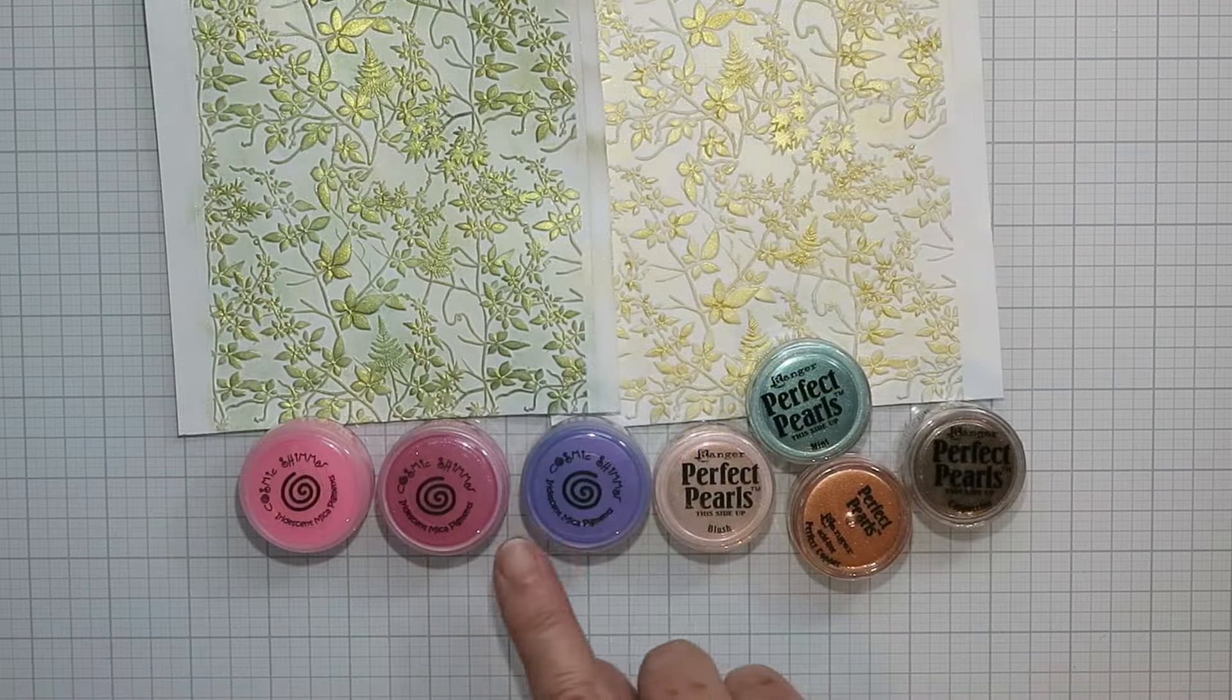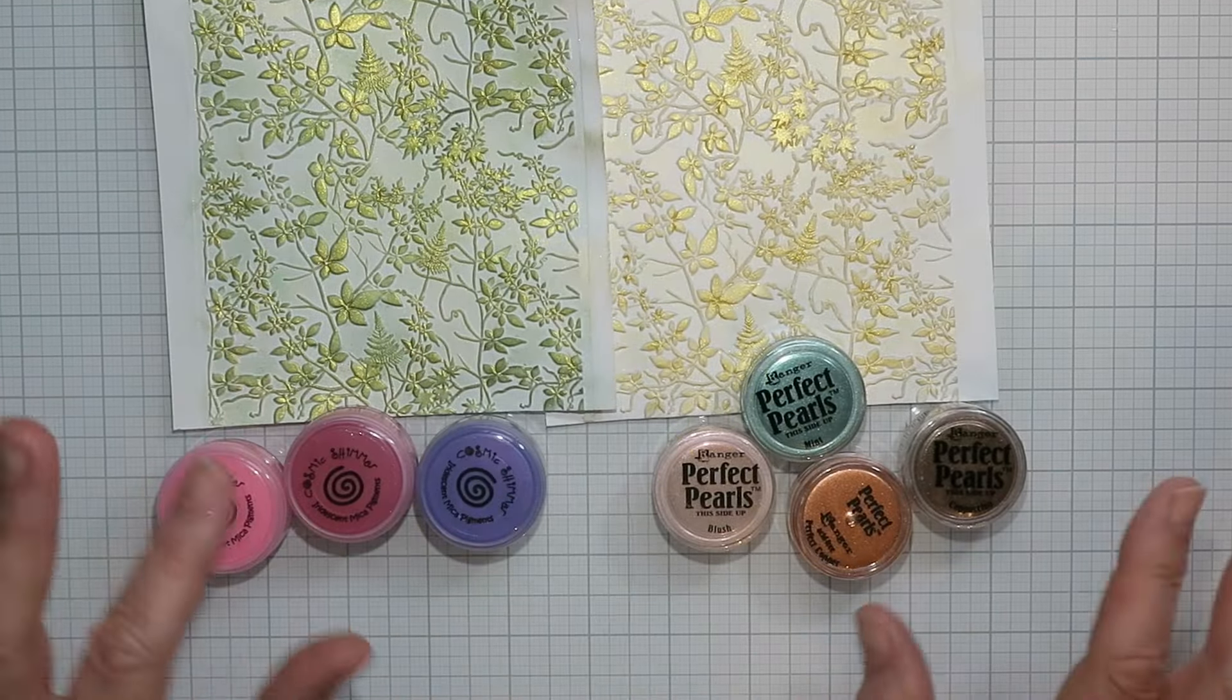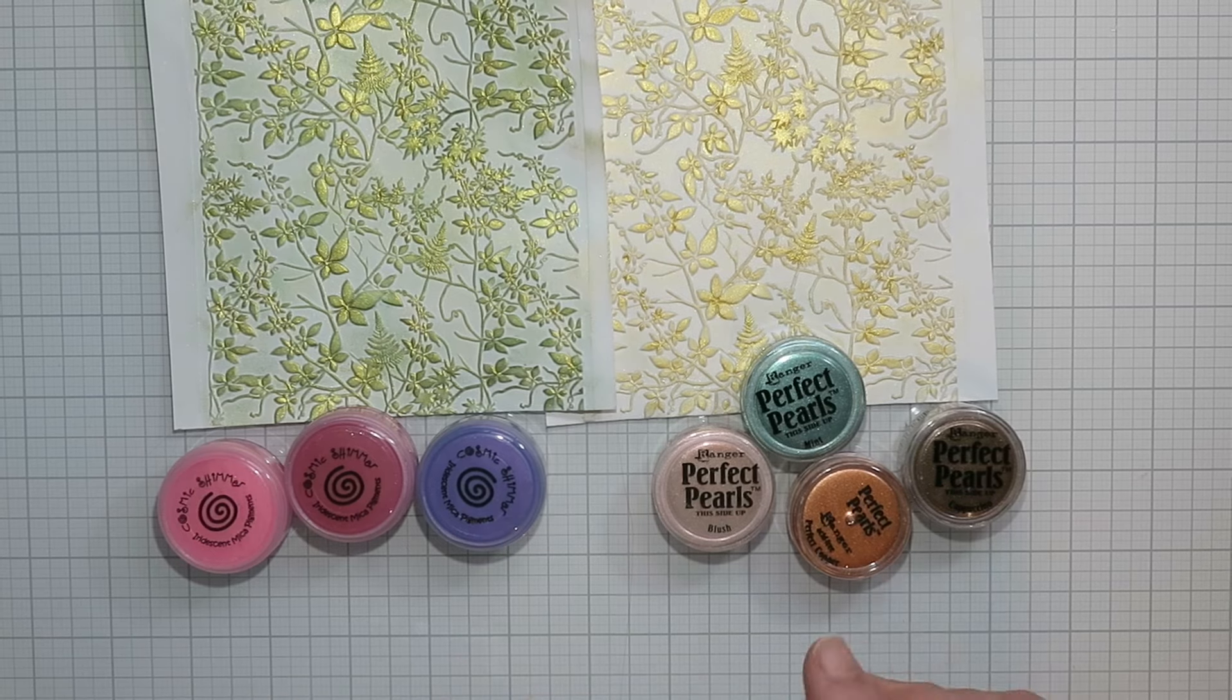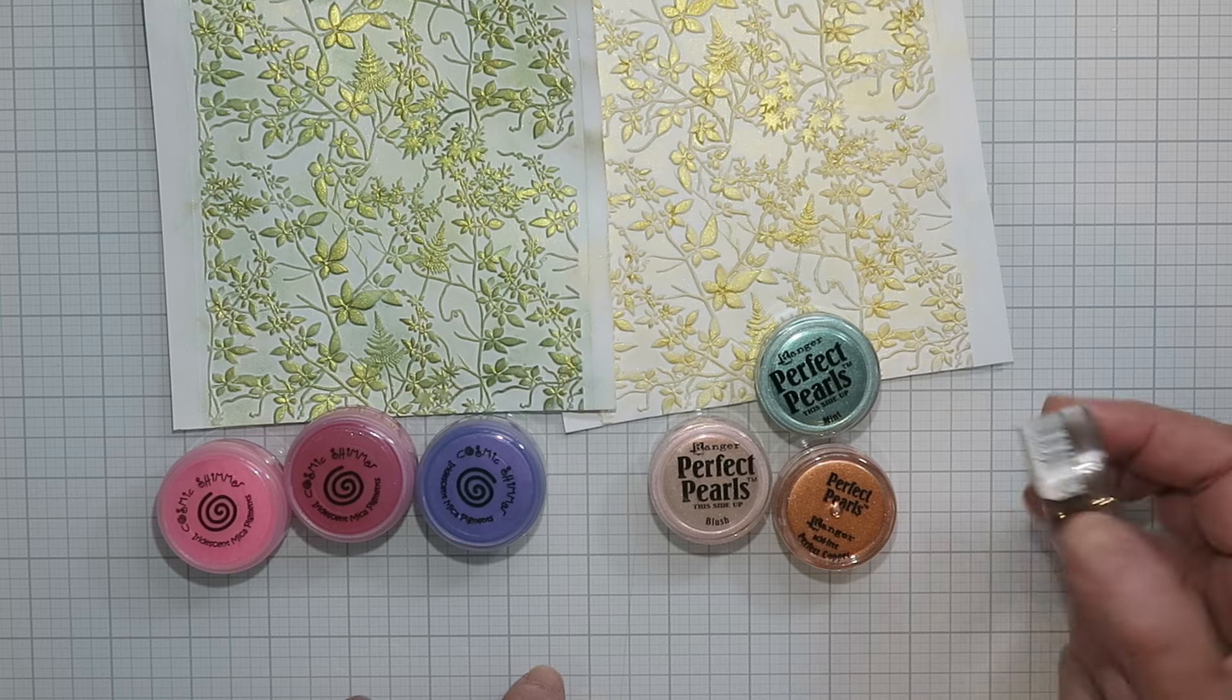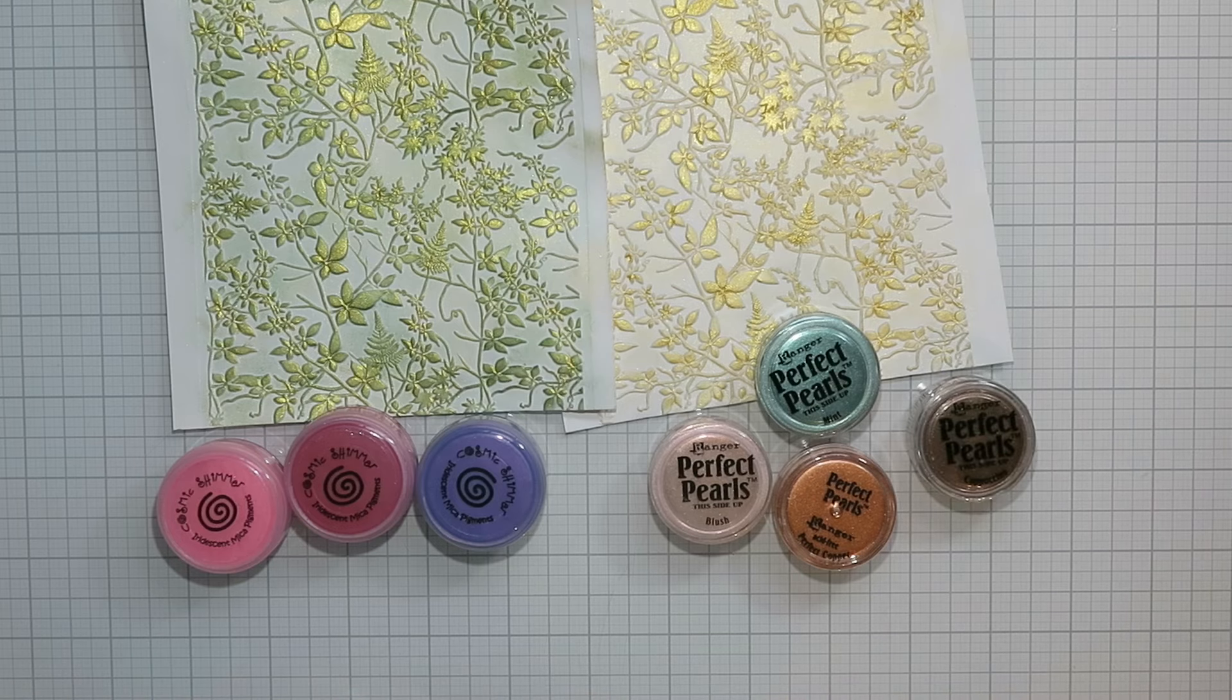Mica powder comes in different shades and colors, so I'm just showing you here you could do these depending on your embossing folder. There's so many color variations you could choose from—you could do a rainbow if you wanted.